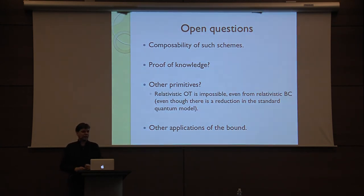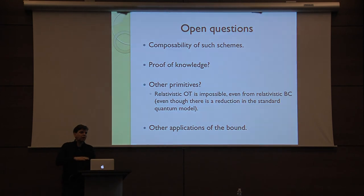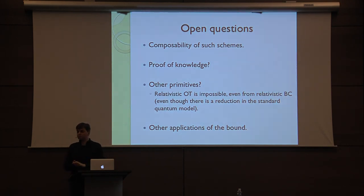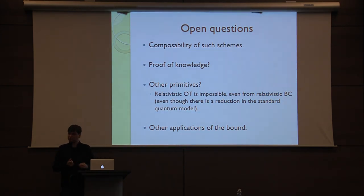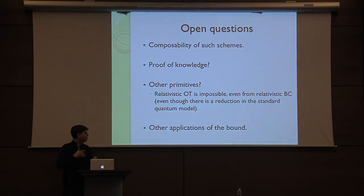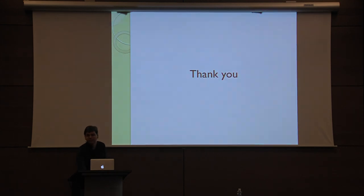Another surprising thing is that because we work on these low probabilities, this isn't even a proof of knowledge: if you can win this game, we cannot show that you can produce the cycle, because of this M factorial thing — you can only show creation of the Hamiltonian cycle with probability 1 over M factorial, which is not great. And for other primitives, like oblivious transfer: in the quantum setting there is a reduction from bit commitment to oblivious transfer, but here things don't work out well, because this bit commitment scheme only works for a certain amount of time and oblivious transfer needs very static security for both players. So what are other applications of the bound?